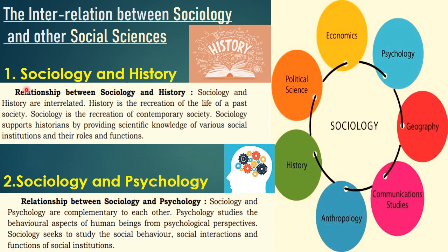The next one is sociology and psychology. Psychology means the study of the human mind or mental processes, and sociology is the study of social relationships. Sociology learns about the behavior of people in a group, while psychology studies individual behavior. Somehow these two complement each other. So we can say that sociology is interlinked with all the other social sciences.